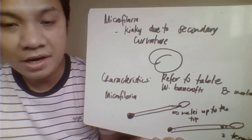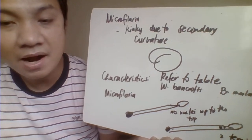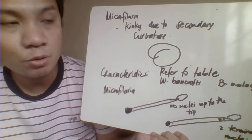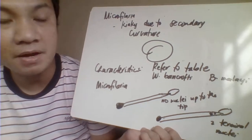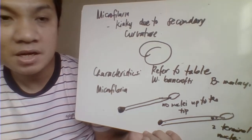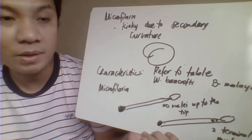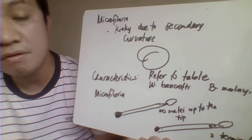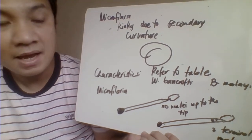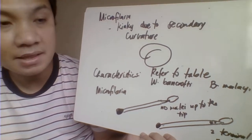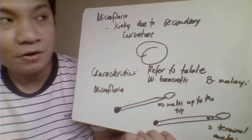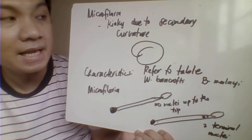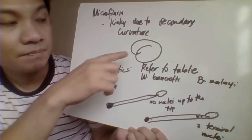For the microfilaria of Brugia malayi, it measures 177 to 230 micrometers — much smaller than the microfilaria of Wuchereria bancrofti. It has a secondary curvature appearance, giving it a kinky appearance, unlike the graceful appearance of Wuchereria bancrofti.